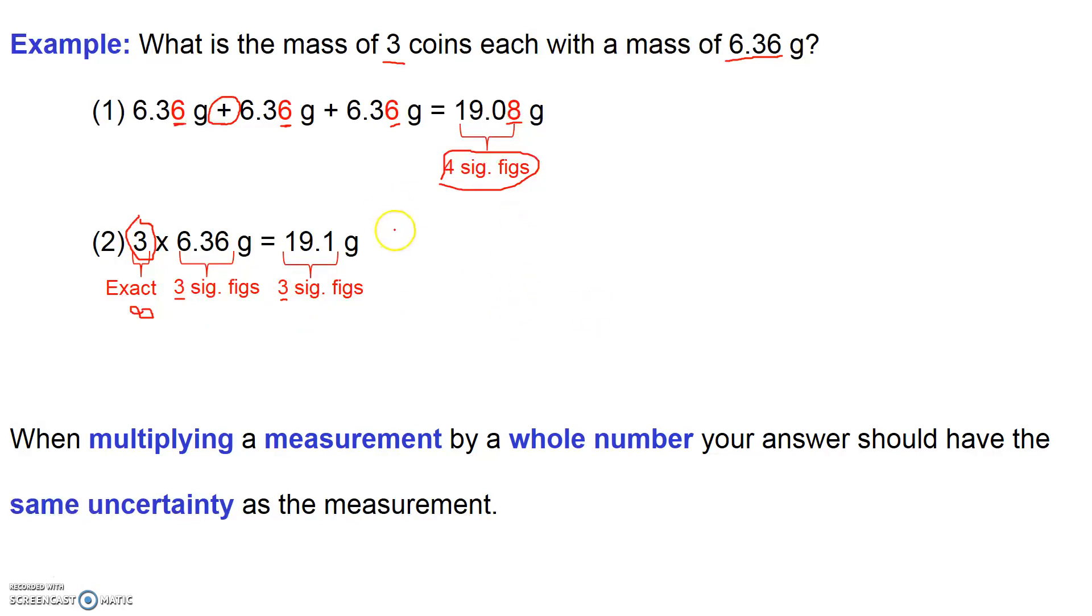What you see is, by taking this wrong approach, I actually lost one of my significant figures. This is the correct approach, and I have my answer given to plus or minus 0.01 grams. So the take-home message here is that when you multiply a measurement by a whole number, your answer should have the same uncertainty, that's the same plus or minus, as the measurement itself.